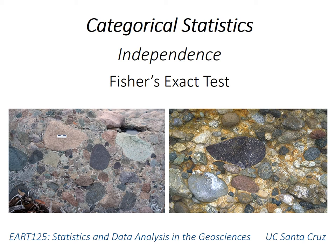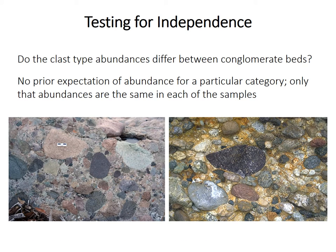This video covers Fisher's exact test, which is a method for testing for independence, generally in small samples and small contingency tables. A quick recap of tests for independence: the previous video discussed goodness-of-fit tests, but what if you don't have a prior expectation for abundance? For example, you might just want to know if the abundance of different rock types differs between two conglomerate beds — we just want to know, are they the same? So the abundance of each rock type is independent of the bed in which it's found. Hence the name: testing for independence.